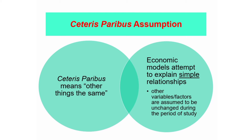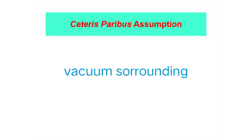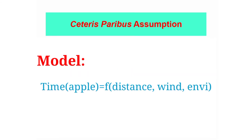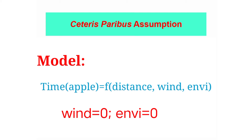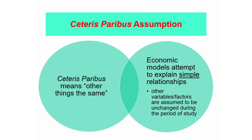kung wala bang nakaharang, and the likes. Kung baga, ang model natin sa situation ay time is a function of distance, wind, environment, etc. To calculate time, we need to assume that the situation happens in a vacuum — ibig sabihin walang hangin, walang sagabal. In short, we consider only the distance from the tree to the ground and isolate the effect of wind or environment to know the answer. Kasi, magiging complicated na siya kung merong hangin at madaming sagabal sa paligid. Can you follow?